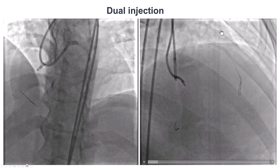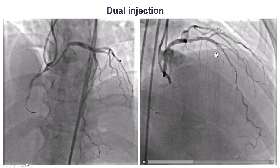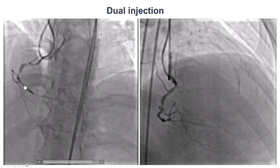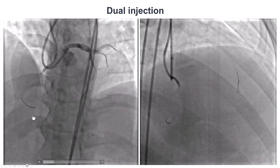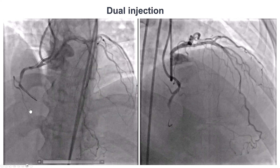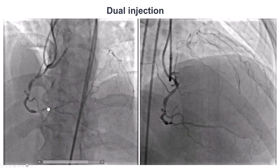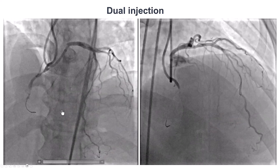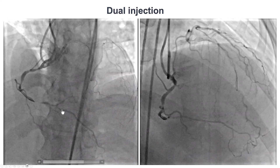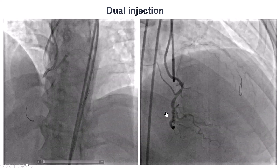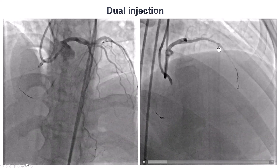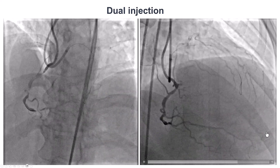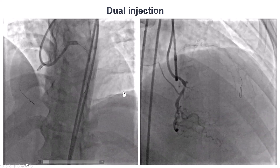This is a dual injection. We see that the previously placed stent in the LAD is well expanded. There is a CTO of the distal right coronary artery that is fairly short. There may actually be a microchannel in the lesion, and the distal vessel has some diffuse disease. The distal cap is proximal to the bifurcation of the PDA and the PLV. There are some septal collaterals that could be used for retrograde crossing, as well as some epicardial collaterals.